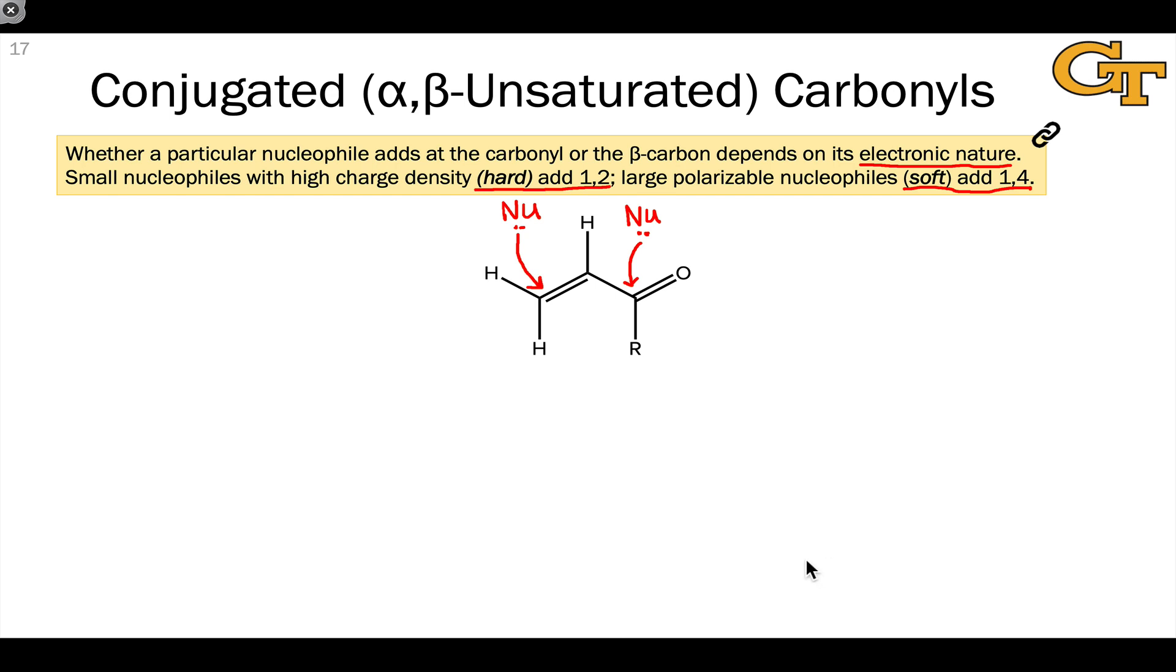Hard nucleophiles are fully ionic or contain very high partial negative charge at the nucleophilic atom, and these are things like organolithiums and Grignard reagents, compounds with pretty much anionic carbons.